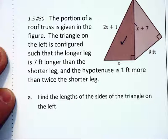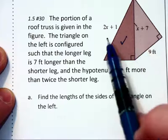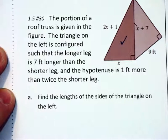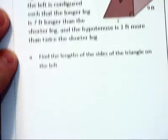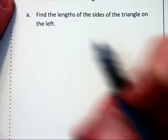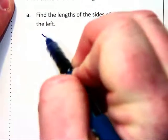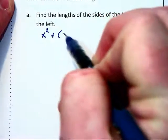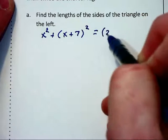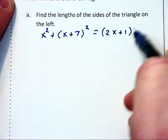And the hypotenuse is 1 foot more than twice the shorter leg. That is represented by 2x plus 1. Because this is a right triangle, we can apply the Pythagorean theorem: a squared plus b squared equals c squared.